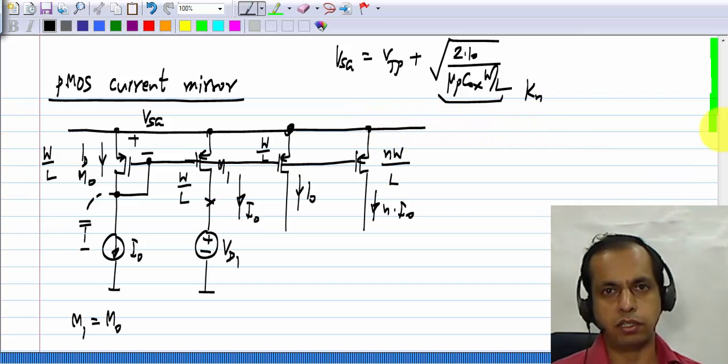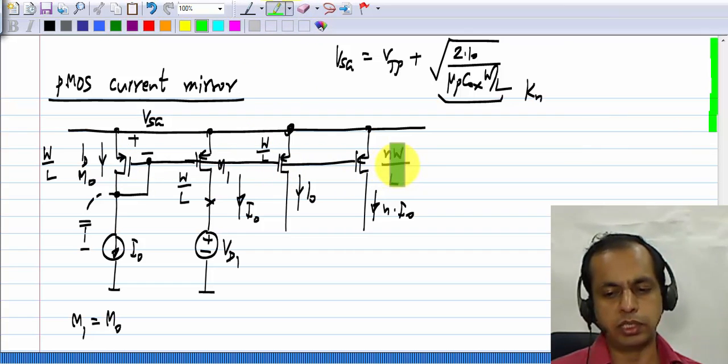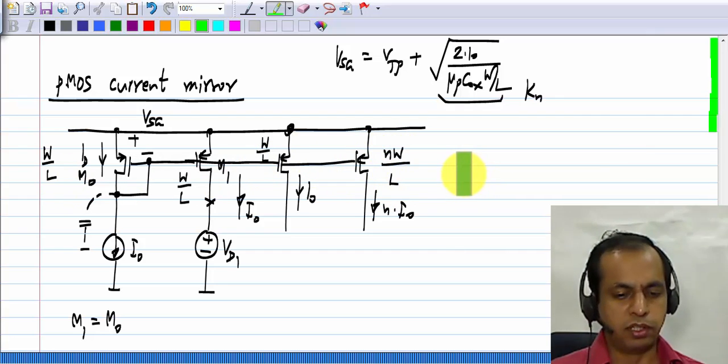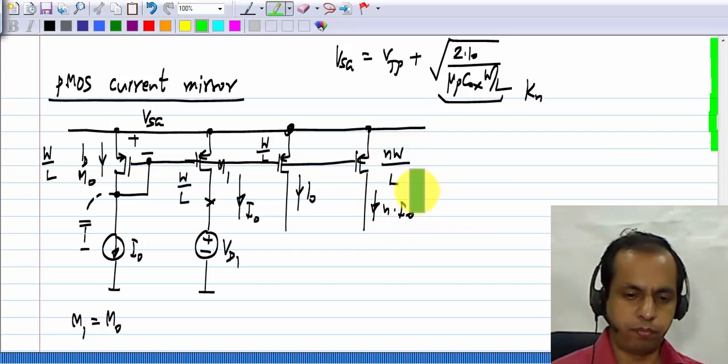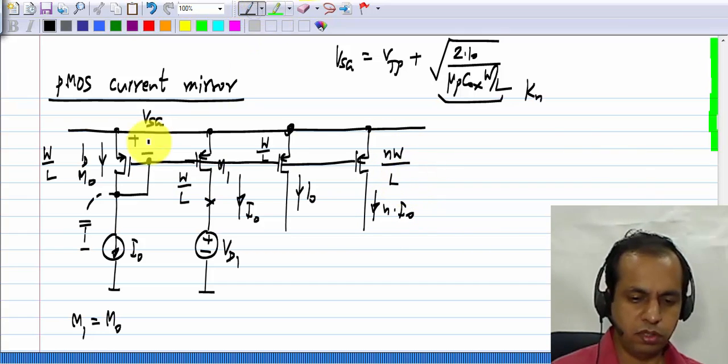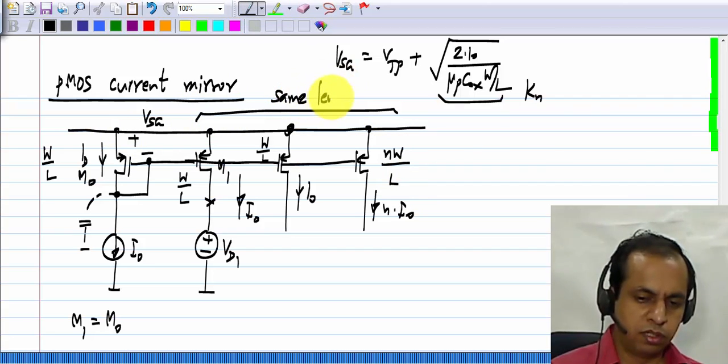Now, one practical constraint which I want to elaborate here is that when you do have current mirrors, and you want to realize different current values, you change the width, but you do keep the lengths of all transistors the same, because this inverse proportionality to L is not exact. It does not matter whether it is inversely proportional or has some other complicated dependence, as long as they all have the same L, if you have N times W, you will get N times the current. For all transistors, you use same length.